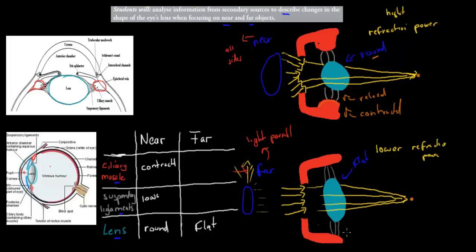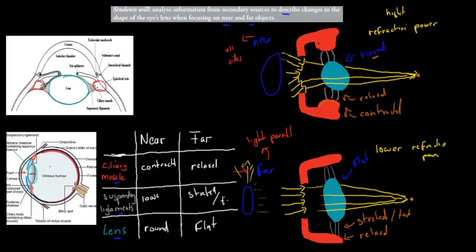For far vision, the ciliary muscles are relaxed, which means they sit further from the lens and pull the suspensory ligaments taut — they become stretched. Because the suspensory ligaments are attached to the flexible lens and are being stretched, they also pull the lens, flattening it. So: relaxed ciliary muscles → taut suspensory ligaments → flat lens.